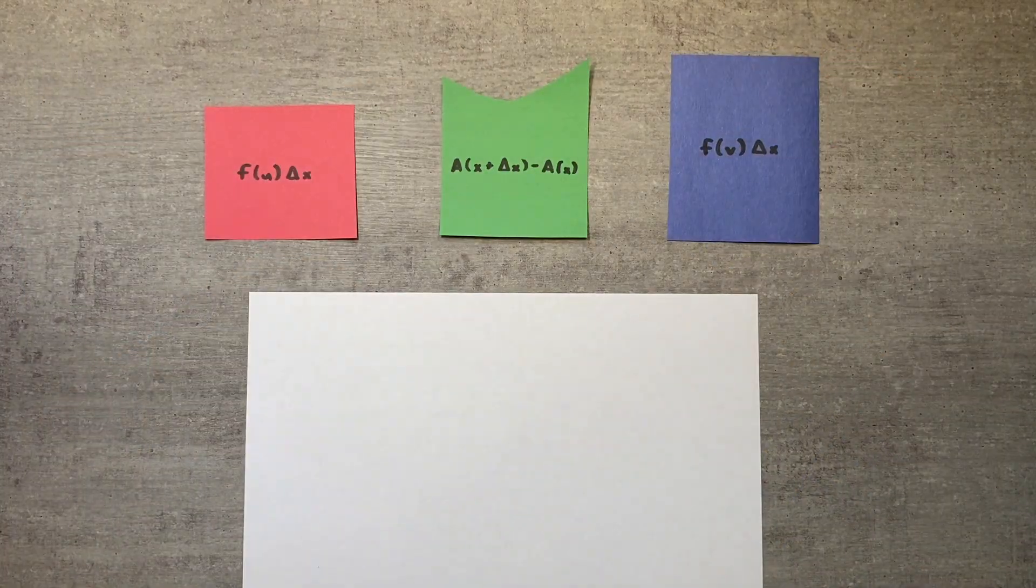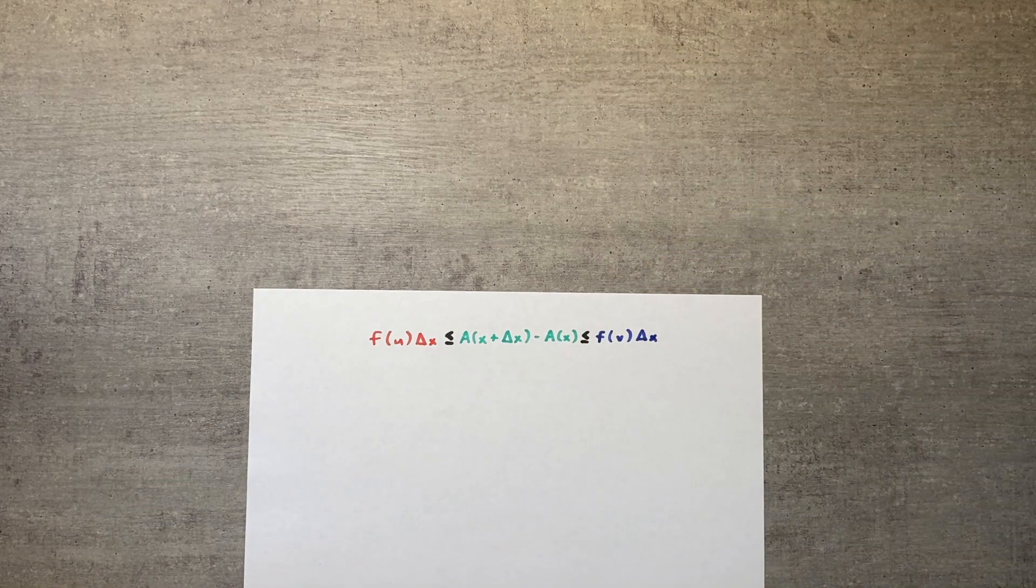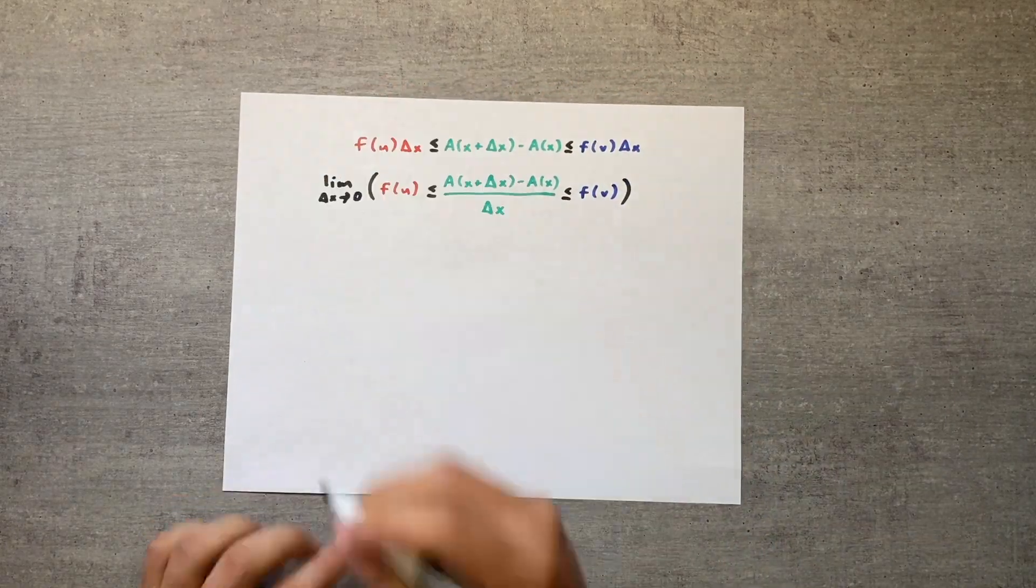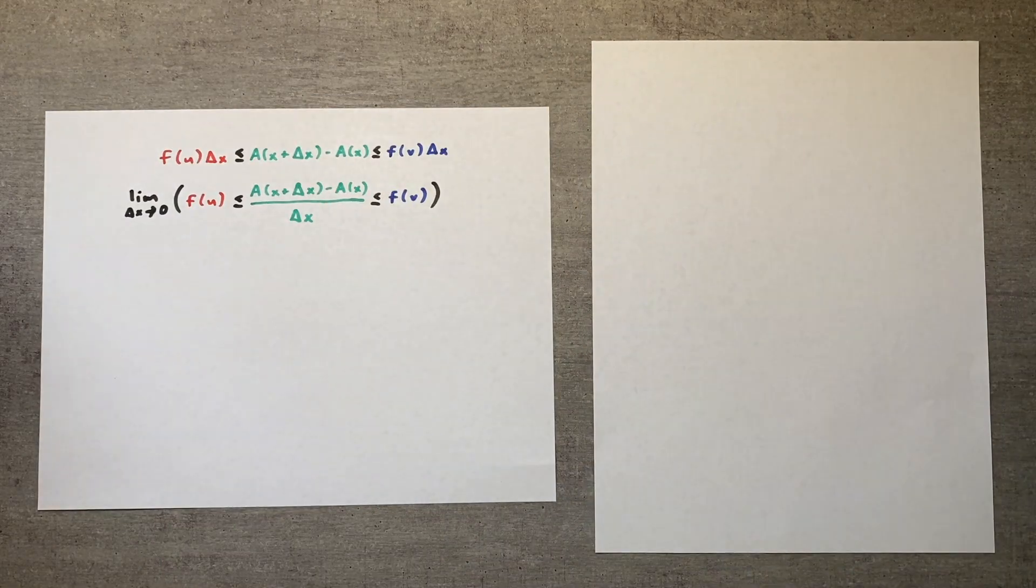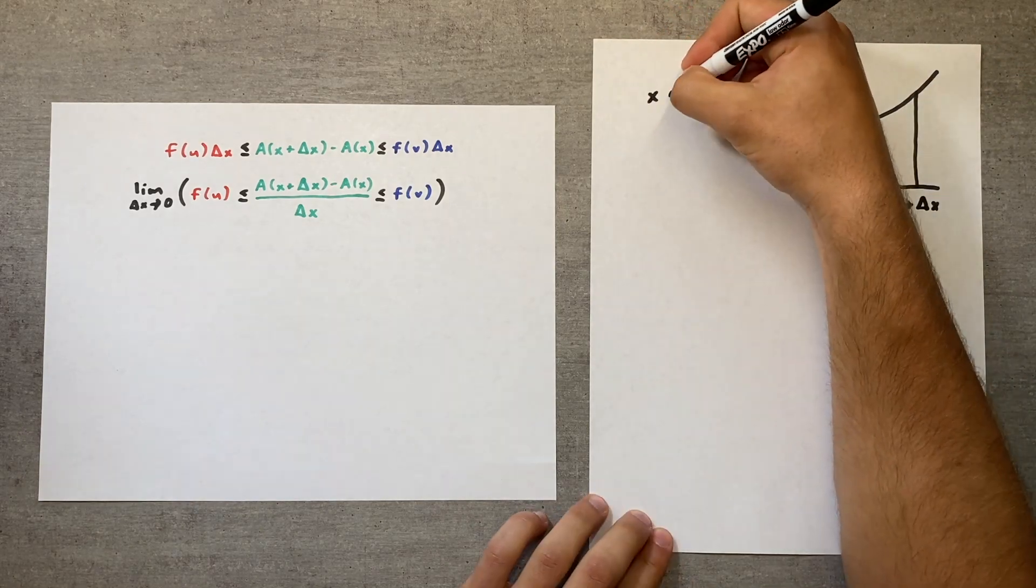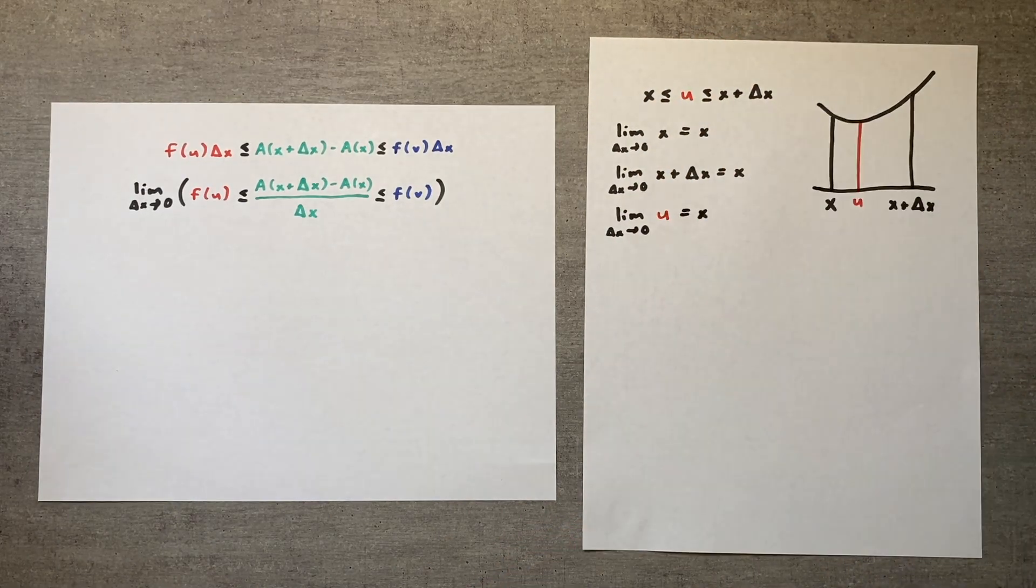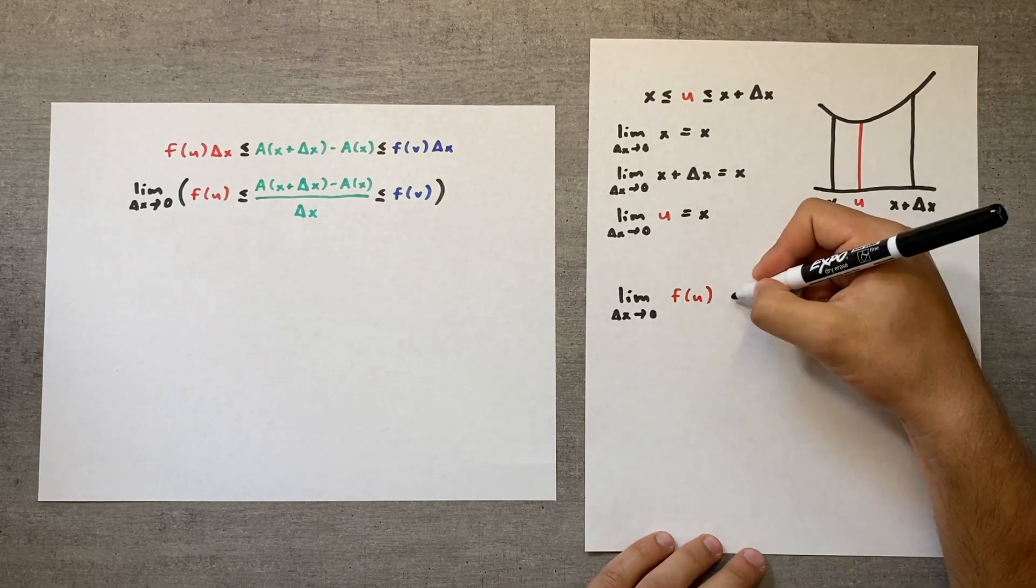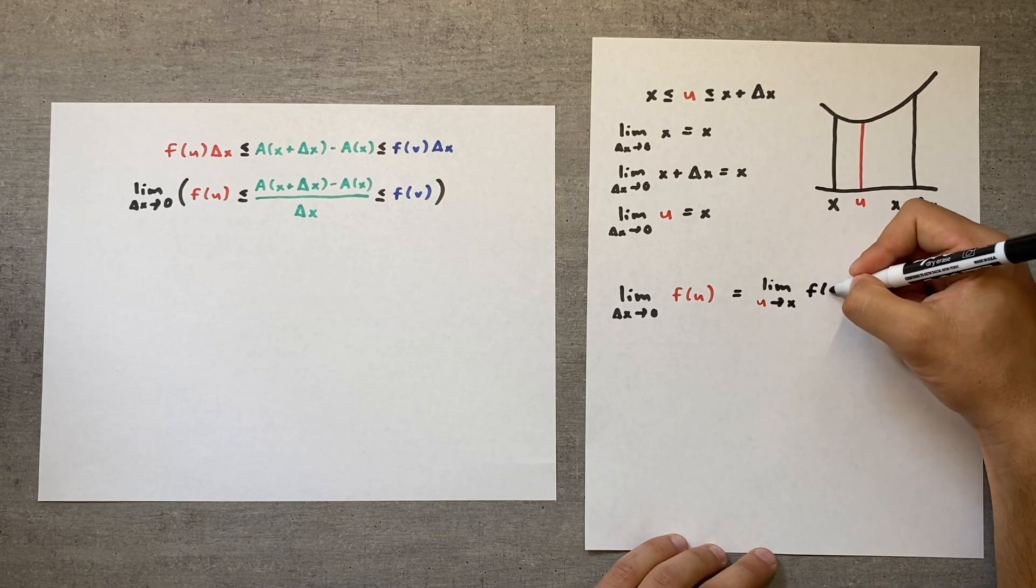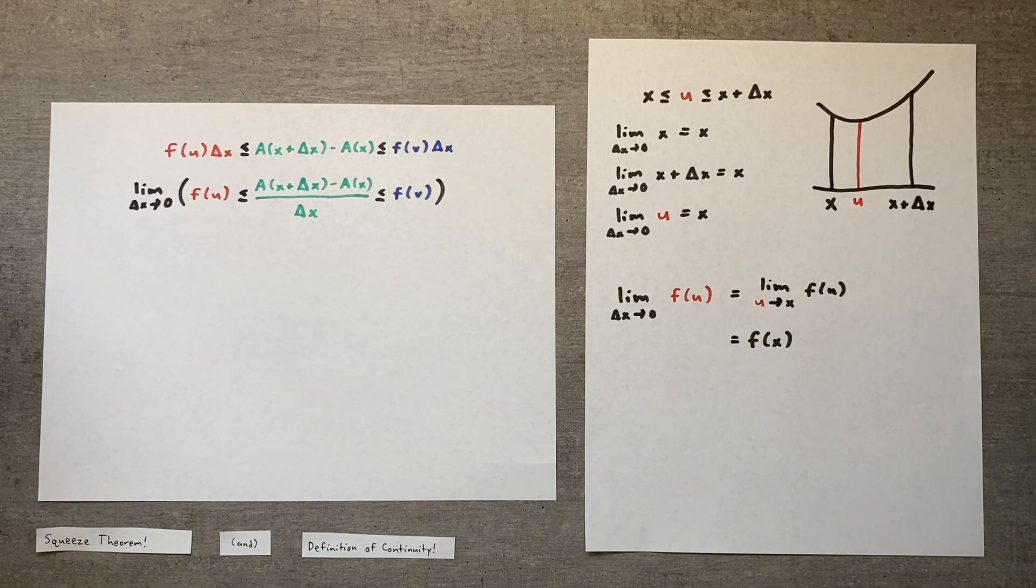Let's write out our inequality and take the limit as delta x approaches zero, just like we did in proof 2. We'll also repeat the step of dividing all three expressions by delta x. In order to figure out what the left and right sides of this inequality approach, we need to examine u and v as delta x approaches zero. Since we defined u to be a value between x and x plus delta x, u gets squished between these two values as delta x gets smaller, and it ultimately approaches x. This means that we can replace our limit as delta x goes to zero with a new limit, where instead u goes to x. Taking this limit of f of u gives a result of f of x. These two steps are allowed because of the squeeze theorem and the fact that f is a continuous function.